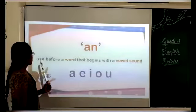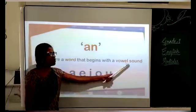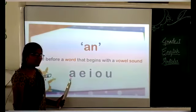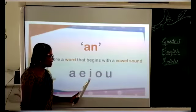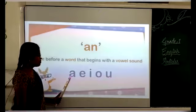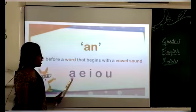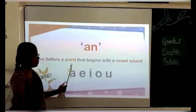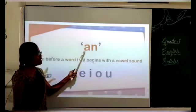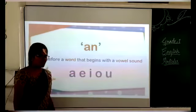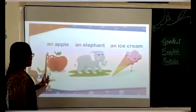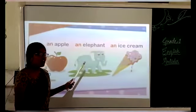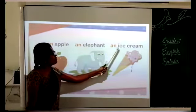The next article is AN, used before a word that begins with a vowel sound. We have five vowels: A, E, I, O, U. So we use AN before a word that begins with a vowel sound. Examples: an apple, an elephant, an ice cream. Here A, E, and I are vowels, so we use AN before these words.